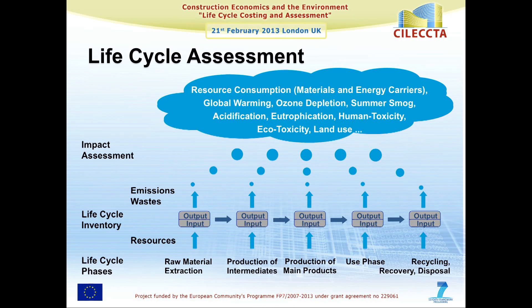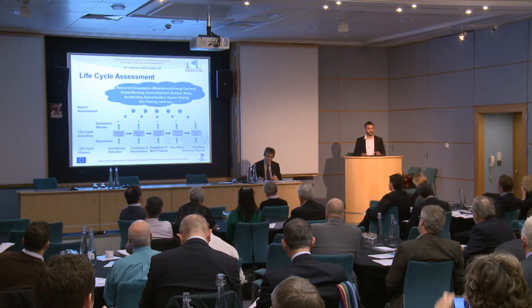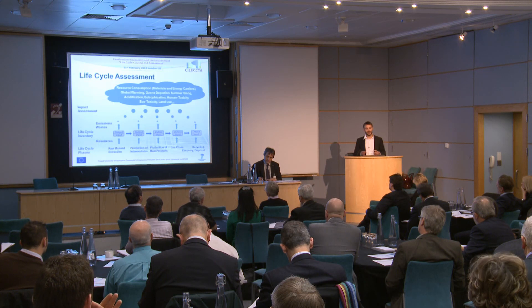Within the impact assessment step, we group the environmental impacts of all the emissions and outputs towards a small number of indicators. Examples of those indicators can be resource consumption, global warming potential — probably currently the most discussed indicator — ozone depletion, summer smog, acidification. Typically we end up with around four to eight indicators, which is a number that actually allows you to compare things because you don't have too much information.